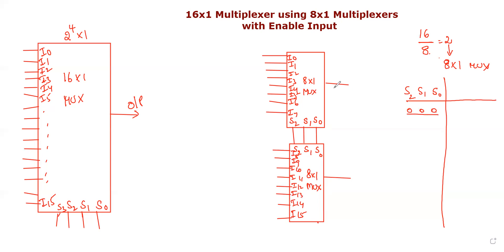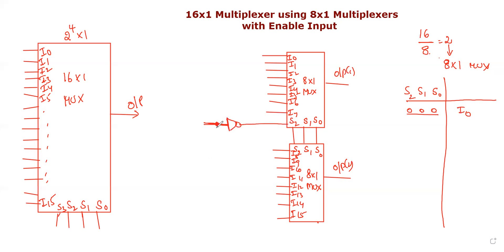For the first multiplexer, inputs I0 to I7 are connected. When the selection is zero-zero-zero, it selects I0 from the first MUX. You can implement I0 to I7 in the first multiplexer. This gives output 1. Then I8 to I15 go into the second multiplexer, giving output 2.